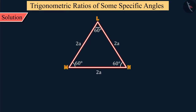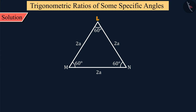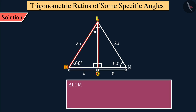Given that the length of each side of the equilateral triangle LMN is 2a and each angle is 60 degrees, from the vertex L of the triangle, draw a perpendicular LO on its opposite side MN, where perpendicular LO is the bisector of angle L and the point O is the midpoint of side MN. From this, we get two congruent right angled triangles, LOM and LON.